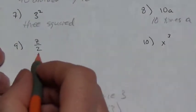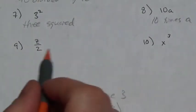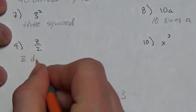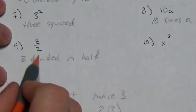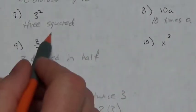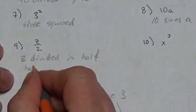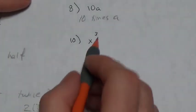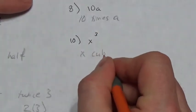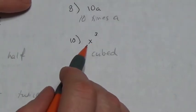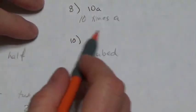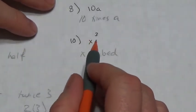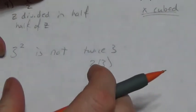10a — the product of 10 and a, or 10 times a. Then z over 2 — is this z divided in half or z divided by half? This is z divided in half, because if you were dividing by a half it would be one over two in the denominator and you'd multiply by the reciprocal. So that's z divided in half, or half of z, or z divided by two. Finally, x to the exponent 3 — this is x cubed. This is not triple x. X cubed is x times x times x — three factors. Three x's would be x plus x plus x. X cubed is x multiplied by x multiplied by x.